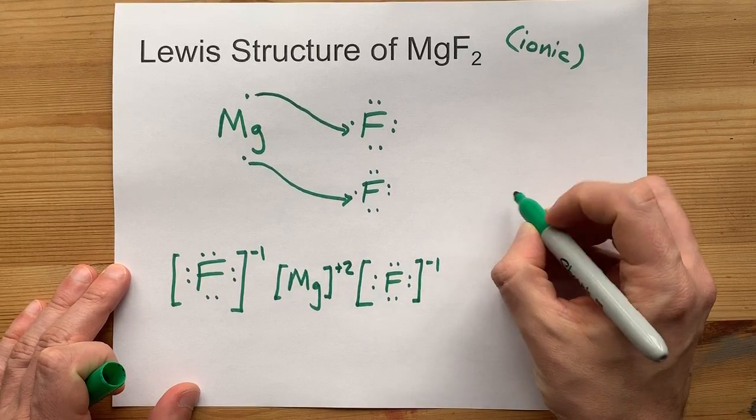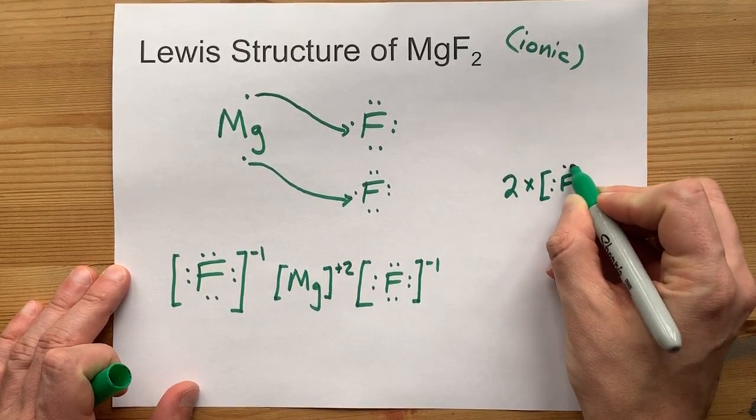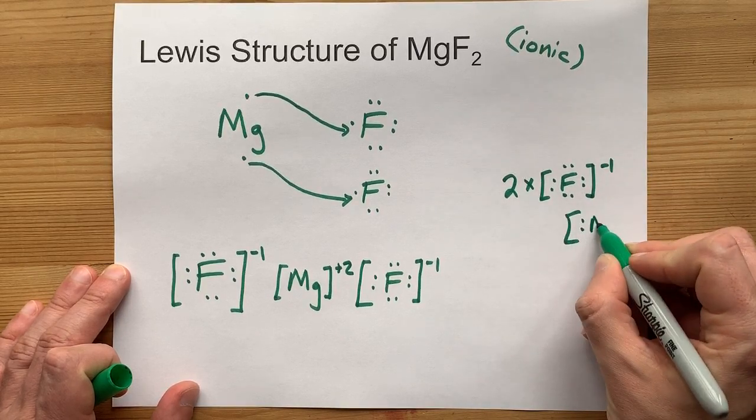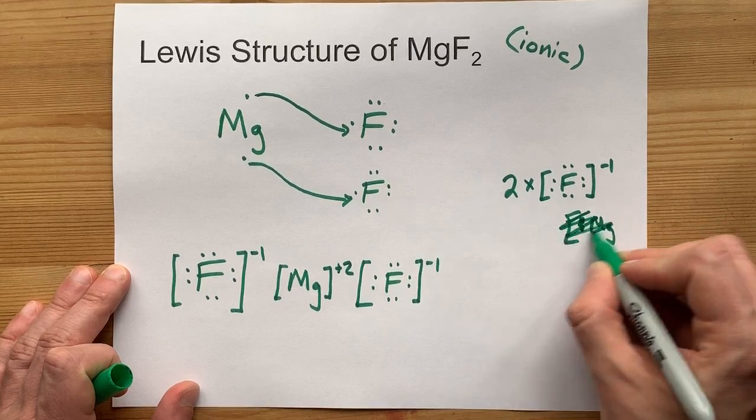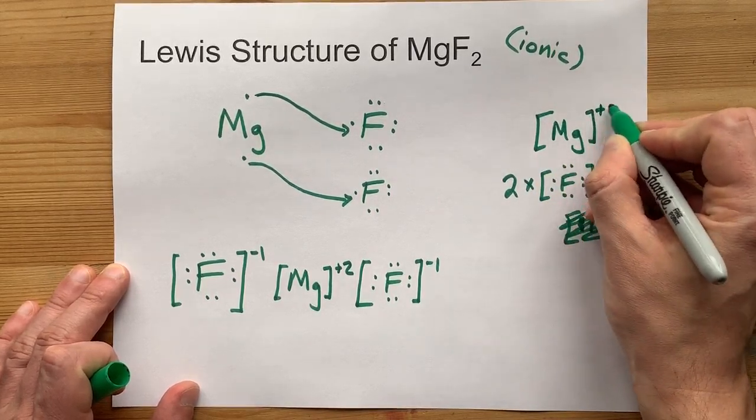You might be able to take a shortcut here and write 2 times F, just so you don't have to write it out twice. Anyways, you'll also have to show that Mg. Whoops, no electrons on Mg. Oh, that would have lost me marks. Mg with the plus 2 charge.